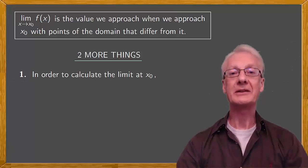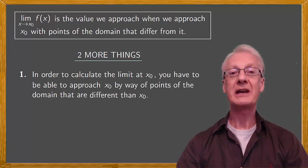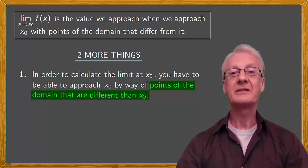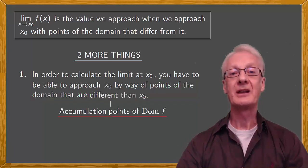In order to calculate the limit at x0, we have to be able to approach x0 by way of points of the domain that are different than x0. This gives rise to the concept of an accumulation point. The limit is calculated at accumulation points of the domain.